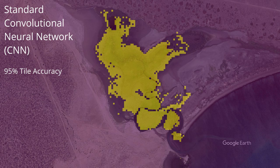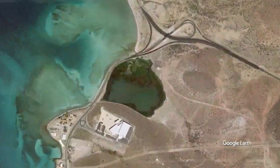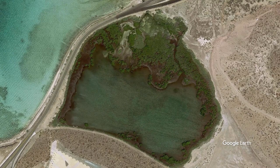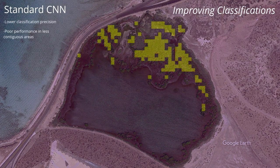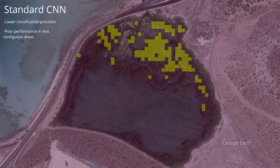However, such a network takes in and classifies tiles or square sections of imagery rather than individual pixels, which greatly limits the precision of our classifications. The obvious first direction was to move away from classifying sections of images to classifying the individual pixels of the image.